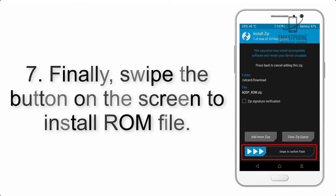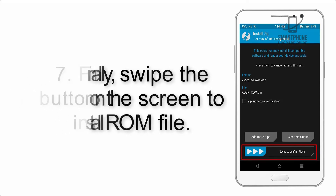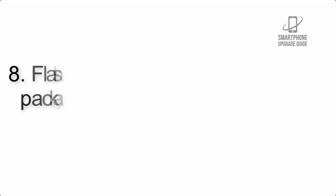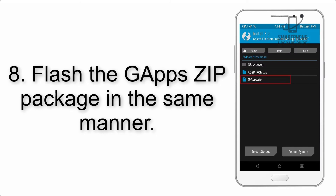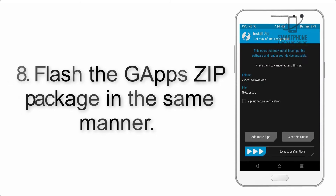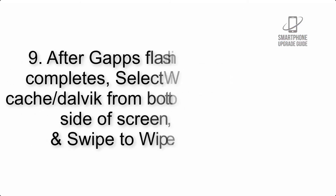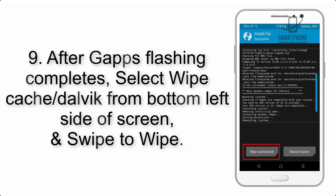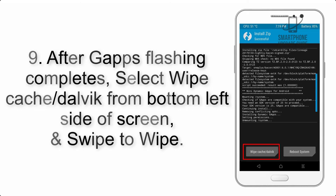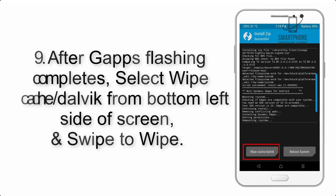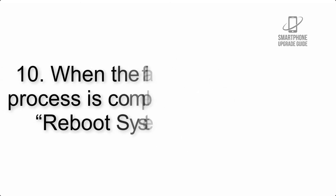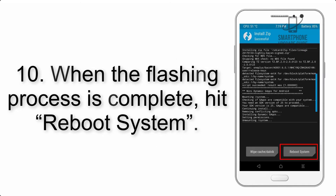Step 7: Swipe the button on the screen to install the ROM file. Step 8: Flash the gapps zip package in the same manner. Step 9: After gapps flashing completes, select Wipe Cache and Dalvik from the bottom left side of the screen and swipe to wipe.